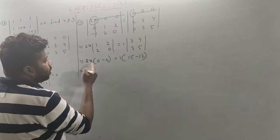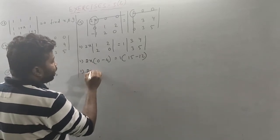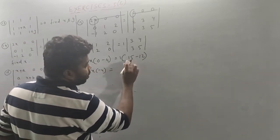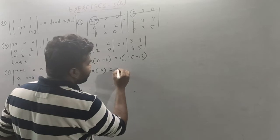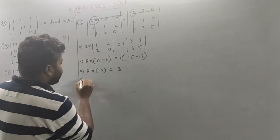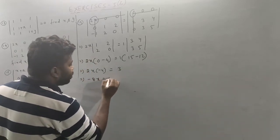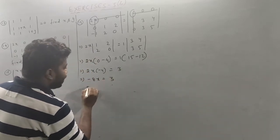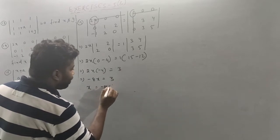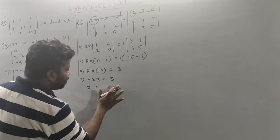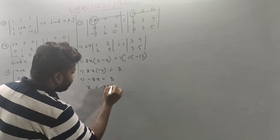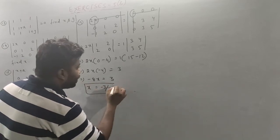So 2x into minus 4 is equal to 3. So minus 8x is equal to 3. Therefore x is equal to minus 3 by 8. This is complete.